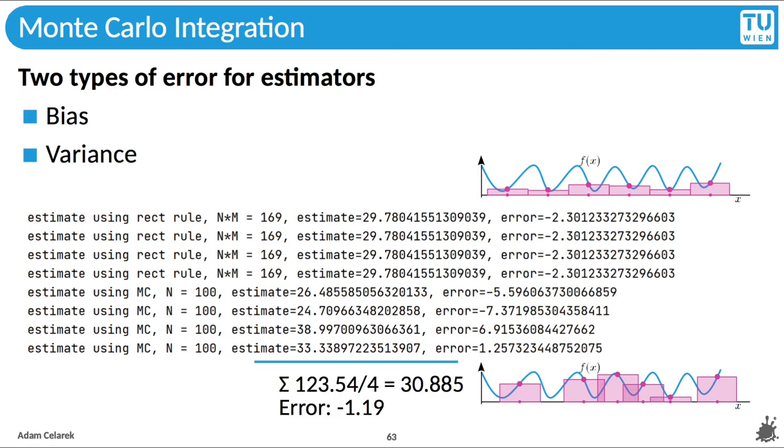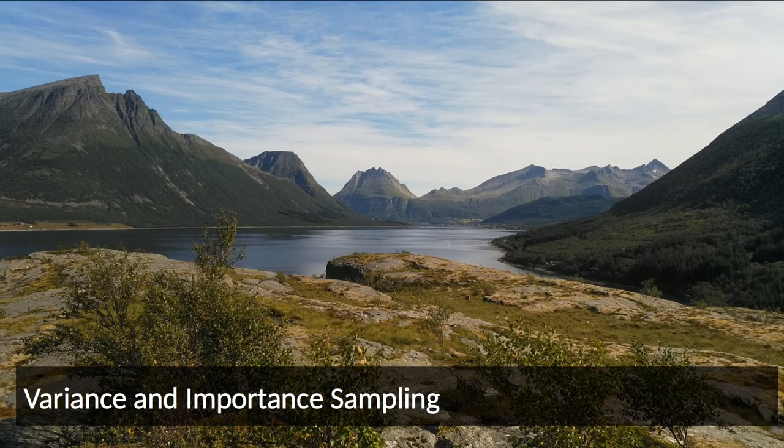We said that we can improve the estimate by averaging several runs. Let's do that. Here we go. Sum and divide by four. The result, 30.885, is more precise than the individual estimates with an error of approximately minus 1.19. Let's look at variance in more detail. There are some important concepts, and then we'll look at importance sampling, a way to reduce variance.